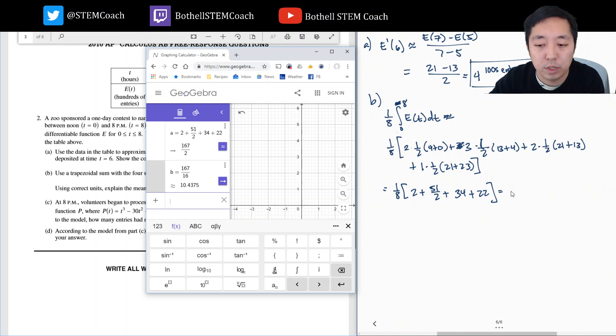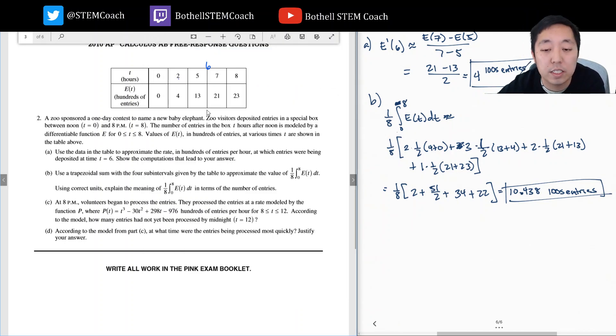Now the units here are hundreds of entries. That's what an average is, it's the same unit as E. So what do we say about this? This is the average number of entries over the eight hours. It's the average value, so you gotta say this is the average number of something.